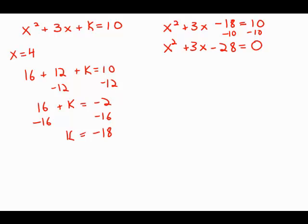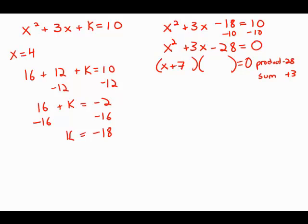Now I want to find two numbers that have a product of negative 28 and a sum of positive 3. Their product is negative, so that means one is negative and one is positive. Their sum is positive, which means the bigger number is positive and the smaller number is negative. That pair is positive 7 and negative 4.